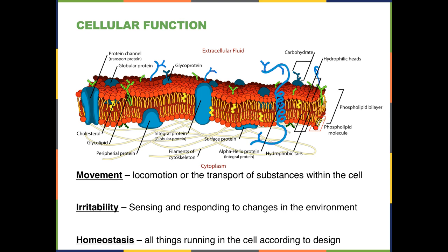The cell membrane is also important for maintaining what is known as homeostasis. You'll hear this term quite a bit, because homeostasis is something that cells and living systems strive to maintain throughout their existence. It means keeping all concentrations of substances and processes within the cell running according to how the cell was designed to function. There are many processes we'll discuss in the future whose role is to maintain homeostasis.